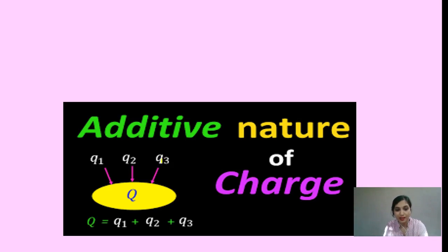You can see this picture: the additive nature of charges. This is a system of Q1, Q2, and Q3. The net charge Q will be the sum Q1 plus Q2 plus Q3.